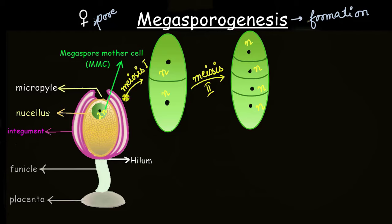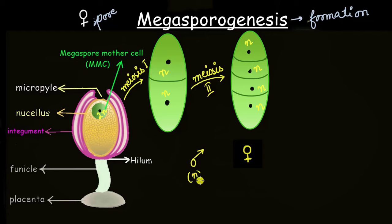Why does the MMC undergo meiosis and not any other type of cell division? For any plant, during sporogenesis or gametogenesis — where male and female spores or gametes are produced — meiosis takes place so the chromosome number is reduced to half. Later, when the male and female gametes fuse, they give rise to a diploid organism with the same chromosome number as the parent plant. That is the reason we see meiosis in the megaspore mother cell.